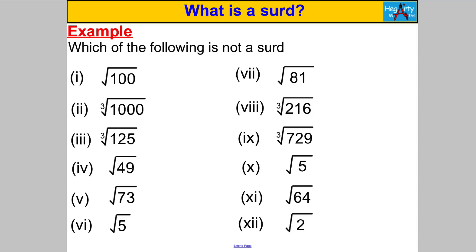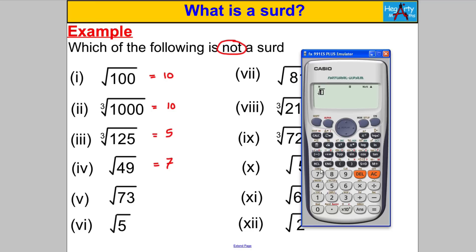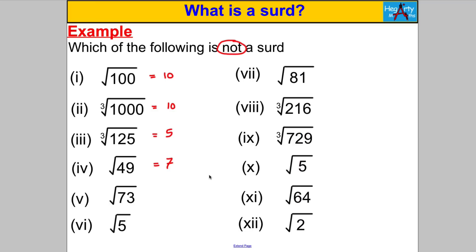Let's try some questions on identifying which of the following is not a surd — it's easier to spot which one is not a surd, so pause the video. The square root of 100 is not a surd because it equals the whole number 10. The cube root of 1000 is not a surd because it equals 10. The cube root of 125 is not a surd because it equals 5. The square root of 49 is not a surd because it equals 7. But root 73 is a surd — 73 is not a perfect square, and if you type it into the calculator it goes on forever.